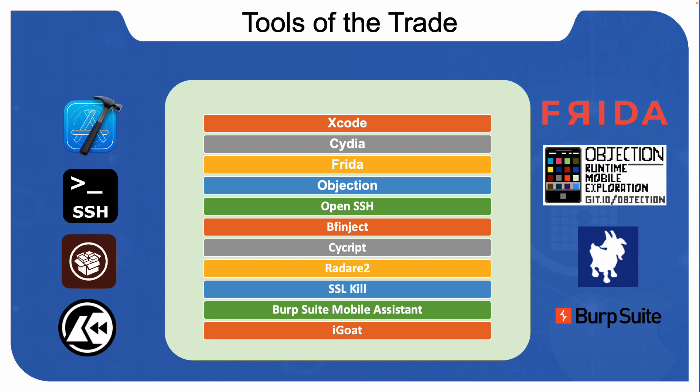Burp Suite Mobile Assistant is no different from the famous Burp Suite — it's a tool to facilitate testing of iOS applications. It supports key functions: you can modify the system proxy settings of an iOS device so that HTTPS traffic can easily be redirected to your Burp interface to monitor traffic. It can also attempt to circumvent SSL or TLS certificate pinning. Note that Burp Suite Mobile Assistant only supports iOS versions 8.0 onwards.